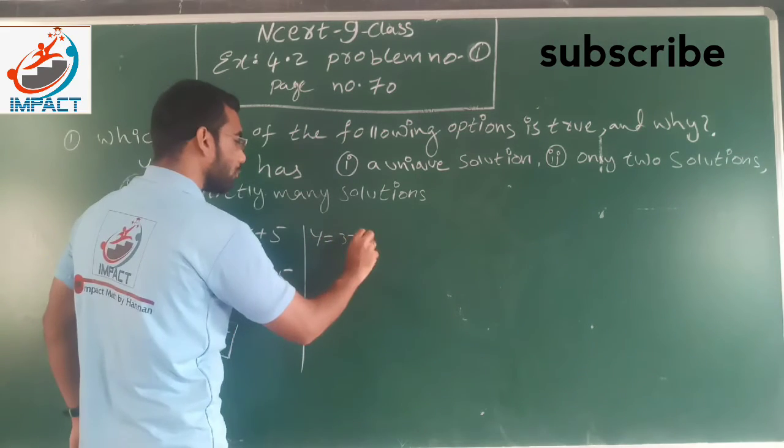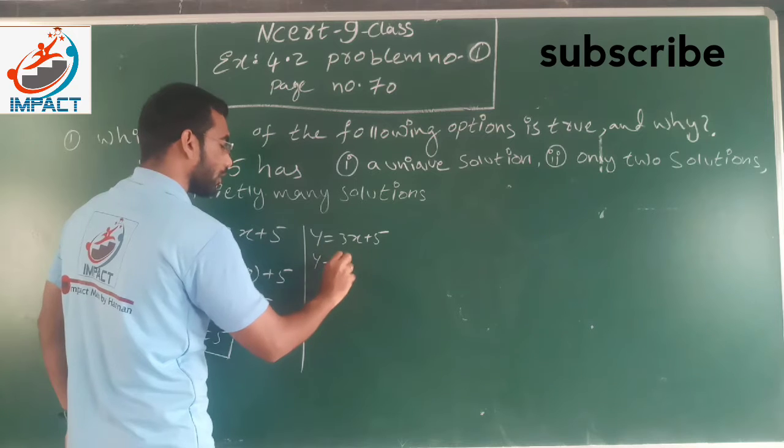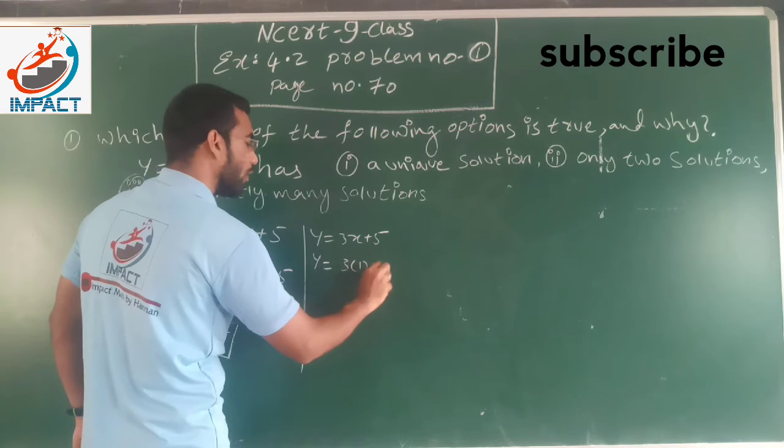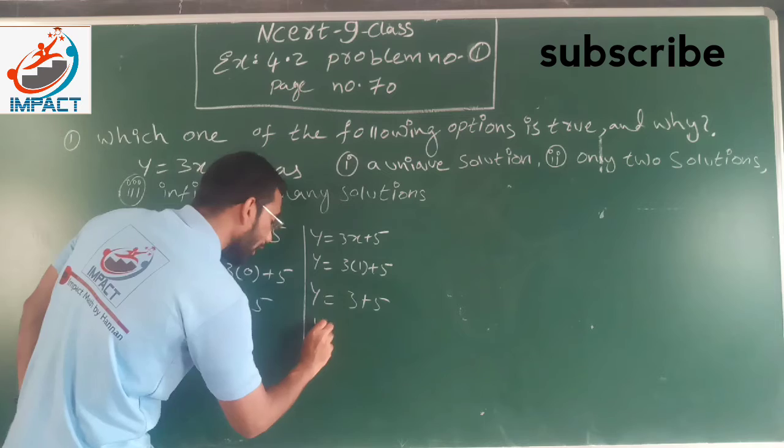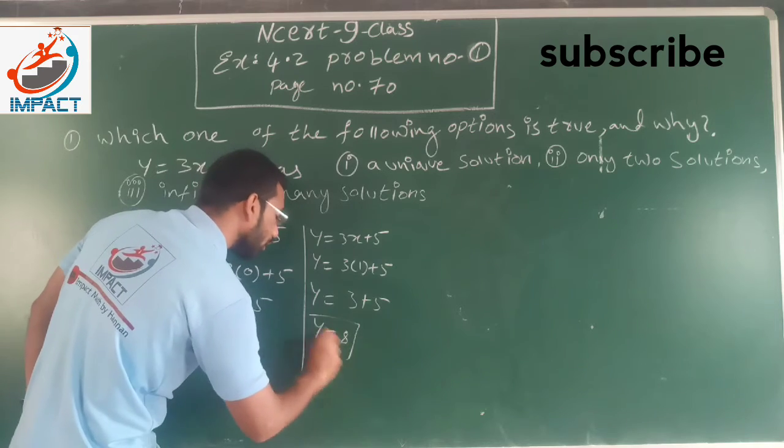y equals 3x plus 5. So y equals 3 times 1 plus 5. So y equals 8. y equals 8.